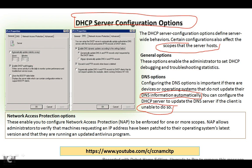Another option is Advanced Access Protection. As the name suggests, access protection means it is a security concern. These options enable you to configure Network Access Protection to be enforced for one or more scopes. We can configure network address protection for one of the scopes.